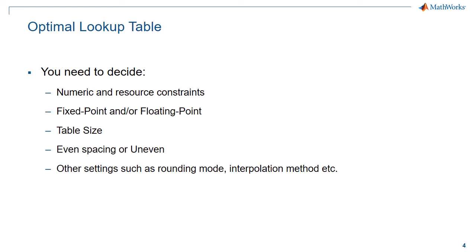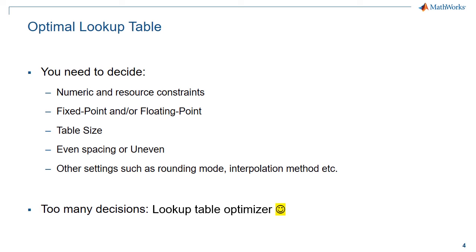Designing an optimal lookup table involves various choices such as fixed point data or floating point data, the size of the table, evenly spaced or unevenly spaced data, and other algorithm settings such as linear interpolation, while meeting numeric and hardware resource constraints. All of this is automated using the lookup table optimizer.